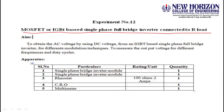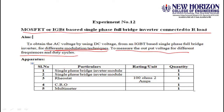The objective is to obtain AC voltage from DC using an IGBT based single phase full bridge inverter for different modulation techniques, and to measure output voltage for different frequencies and duty cycles. The apparatus required is a single phase full bridge inverter module, a rheostat, a CRO, and a multimeter.